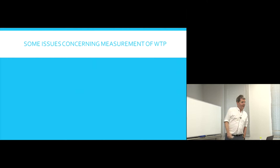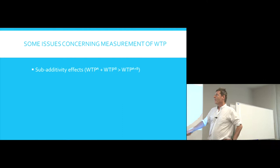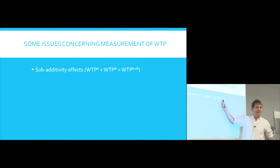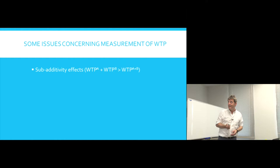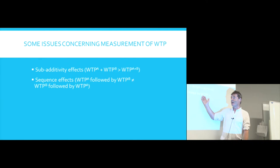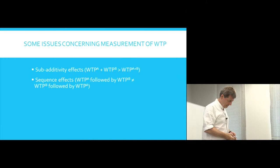There are some issues concerning the measurement of willingness to pay. One problem observed is sub-additivity effects: people's willingness to pay for good A plus their willingness to pay for good B is typically greater than their willingness to pay for A and B together. That's slightly unfortunate because it means the way you ask questions influences the answers. Similarly, there are sequence effects — asking about willingness to pay for A followed by B may give different answers than asking about B followed by A.